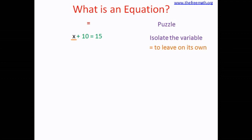So if I want to isolate x, what do I need to do? I need to get rid of plus 10. How do I get rid of plus 10? We do an inverse operation — that means we do the opposite thing. What is the opposite of plus 10? Minus 10. So if I put minus 10 after plus 10, I am doing an opposite operation.